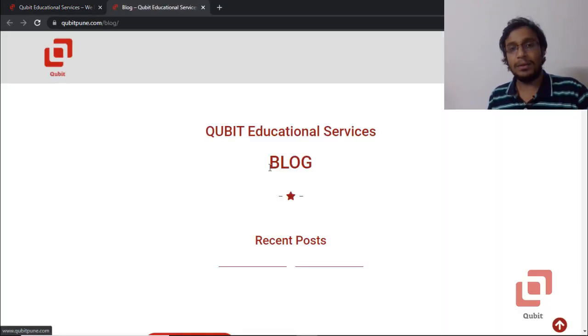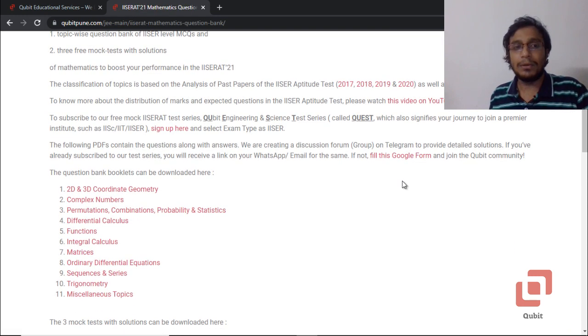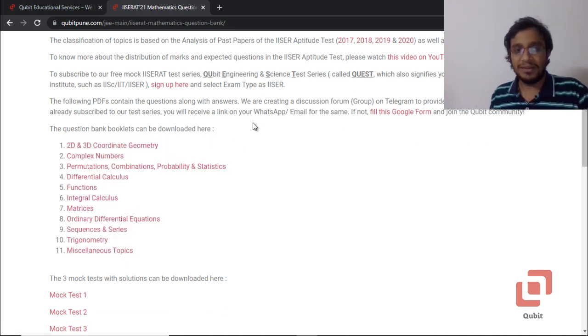That will redirect you to a new page and in this page, you have to search for the IISER 21 mathematics question bank. Many of you might have already visited this link to download the MCQs of the section wise or chapter wise questions.